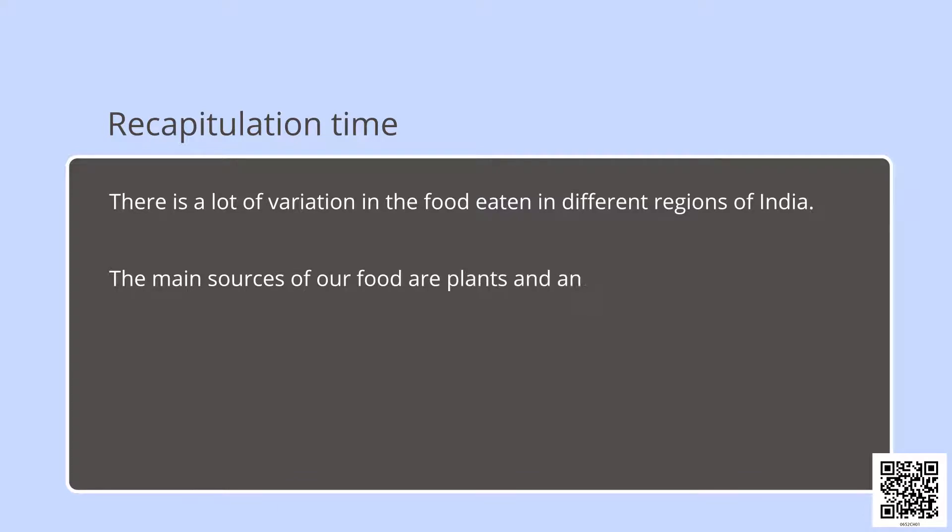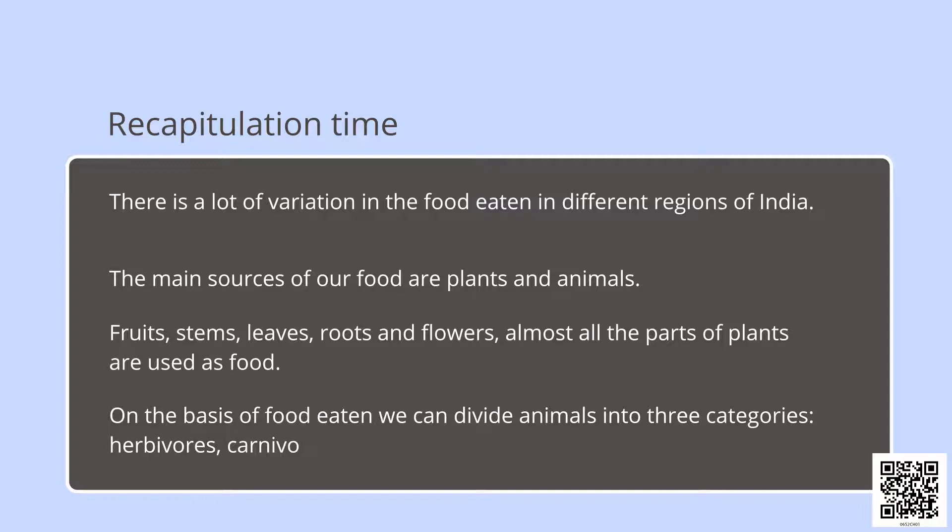Now recapitulation time. Let us revise what we have done till now. There is a lot of variation in the food eaten in different regions of India. The main source of our food are plants and animals. Fruit, stem, leaves, roots, and flowers—almost all the parts of plants are used for food. On the basis of food eaten, we can divide animals into three categories: herbivores, carnivores, and omnivores—those who eat both plants and other animals.